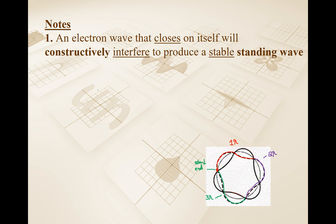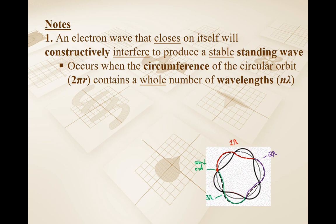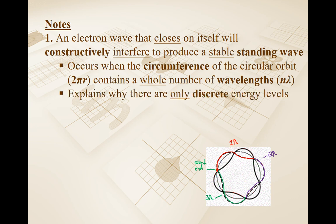So to get constructive interference, you need to have a whole number multiple of wavelengths fit into the circumference. You get constructive interference only when n × λ can fit into the circular orbit. The circumference of a circle is 2πr. So the condition is: 2πr = nλ. As long as we can meet that condition, we have a stable standing wave. This also explains why there are only discrete energy levels and not in-between ones.